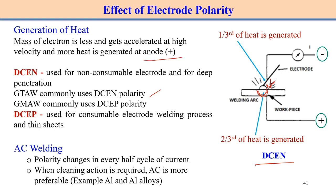In GMAW, we use DCEP (Direct Current Electrode Positive) polarity — the reverse of DCEN. With DCEP, the electrode is connected to the positive terminal and the workpiece to the negative terminal. So one-third of heat is generated on the workpiece and two-thirds on the electrode side. If we want to consume the electrode, more heat on the electrode side is desirable. Therefore, GMAW uses DCEP polarity, which is used for consumable electrode welding processes.